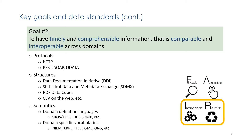The second goal is to have timely and comprehensive information that is comparable and interoperable across domains. This relies on linked data frameworks and aligns to a great extent with the interoperable and reusable FAIR principles. These frameworks span three major areas: the protocols for basic machine-to-machine communication, structure to organize data in different ways, and the semantics associated with those structures, which include data models and ontologies.